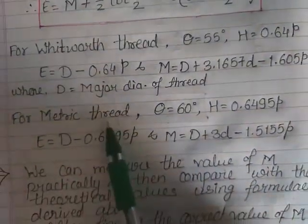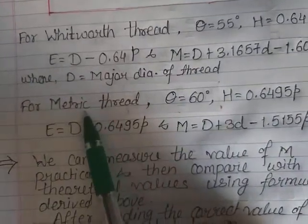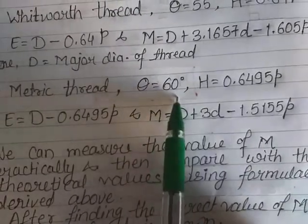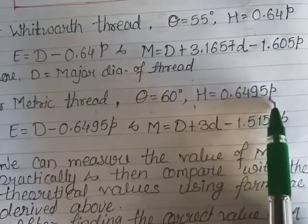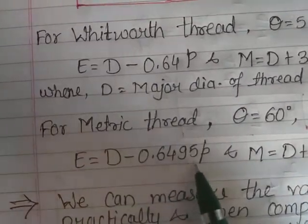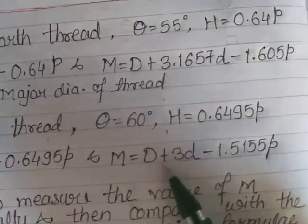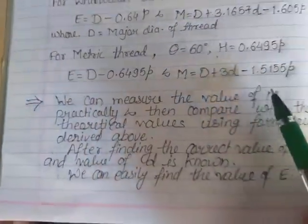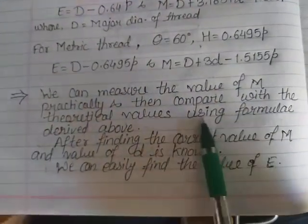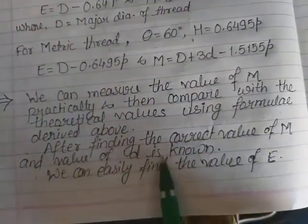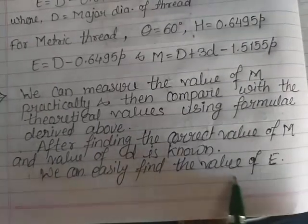For metric thread (IS thread), theta = 60 degrees and H = 0.6495 × pitch. So the effective diameter E = D − 0.6495P, and M = D + 3d − 1.5155P. We can measure M practically and compare with theoretical values using the derived formula. Once M and D are known, we can easily find E.